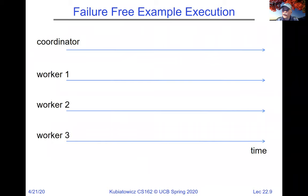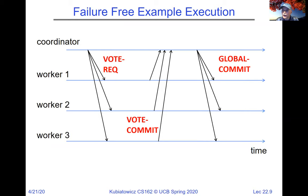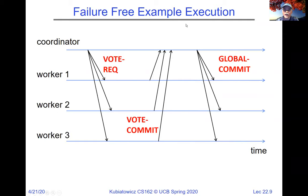Here's a failure-free example: the coordinator says vote request, they all say commit, the coordinator says global commit, and everybody commits. What does it mean to commit? This algorithm is really just trying to make a decision — commit or abort — atomically. What it is that they do is what you're applying it to. For instance, it could be an update to a database or adding a key-value pair to a global data store. The global commit means everybody has agreed that should happen.